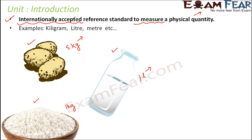Now, why is it important that these units should be internationally accepted? Because let's say today you are in India and you go to buy milk saying you need 2 liters. What if you go to Europe? There also, they should be able to understand how much 1 liter means. So liter has to be an internationally accepted unit so that people throughout the world know how much 1 liter is — meaning 10 kg of rice should mean the same quantity in India, US, Europe, and everywhere.